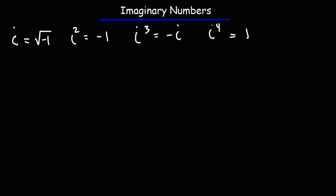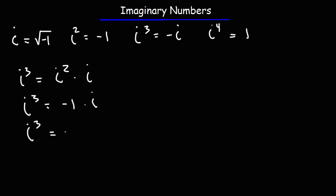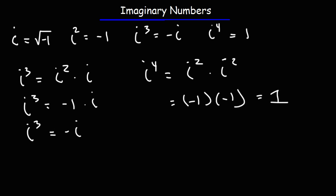Now let's talk about why that's the case, starting with i to the third power. You can think of i to the third power as i squared times i. And since i to the second power is negative 1, i to the third reduces to negative i. In the case of i to the fourth, think of it as i squared times i squared. So it's negative 1 times negative 1, which is positive 1.